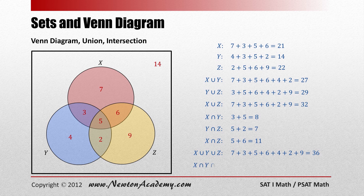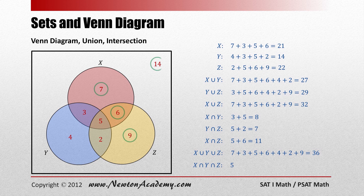X∩Y∩Z is the number of students who are in all three sets, so 5 students. You can also be asked: how many students do not belong to set Y? That would be 7 plus 6 plus 9 plus 14, so 36 students. You're now ready to solve some problems relating to sets and Venn diagrams. Let's begin.